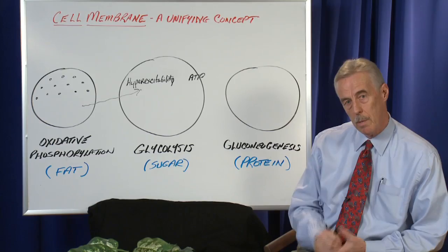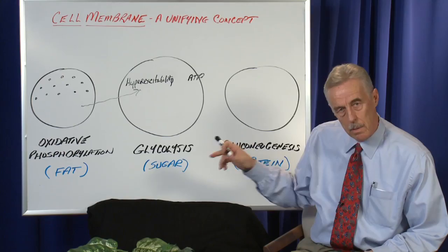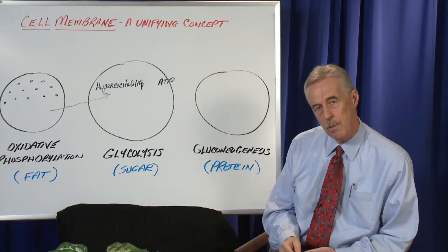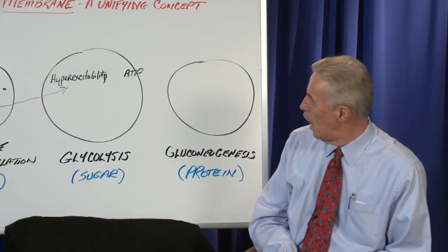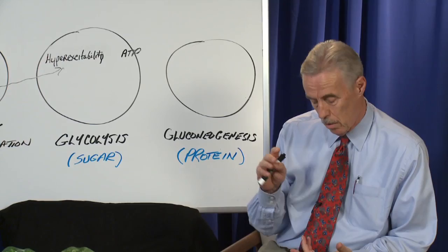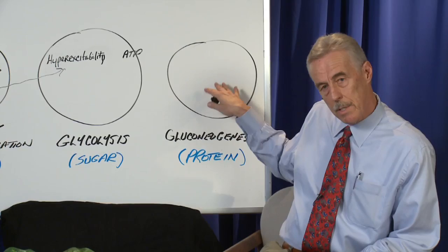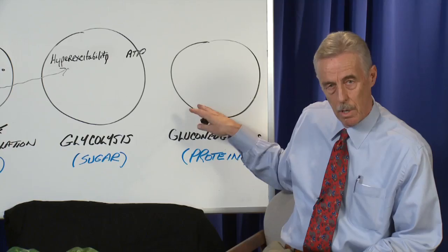When the cell is under extreme stress, the cell membrane converts over to a third choice as far as energy, and that's protein. This is called gluconeogenesis. It's seen in extreme cases like terminal cancer and terminal infections like AIDS or tuberculosis. Basically, the cell membrane is breaking down proteins, which are mainly in muscles, and this is what causes muscle wasting.